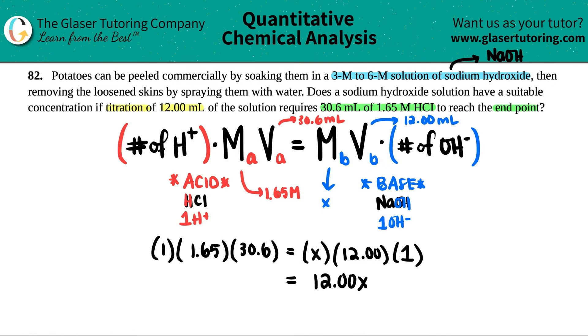Now let's just solve. Algebra—you know, this is 12x. And then let's see what the other side is: 1.65 times 30.6, I get 50.49. We want to solve for the x, so I'm just going to divide by 12. Divide this side by 12.